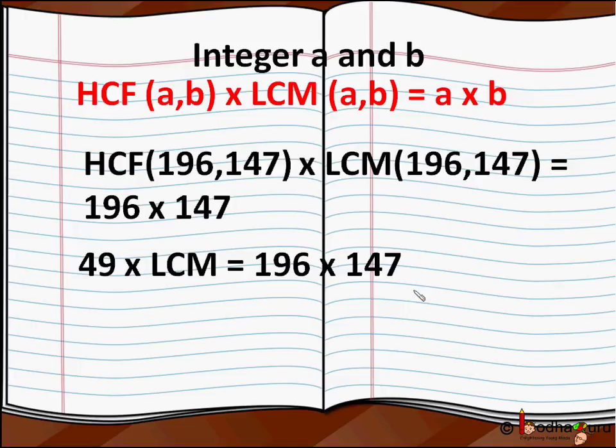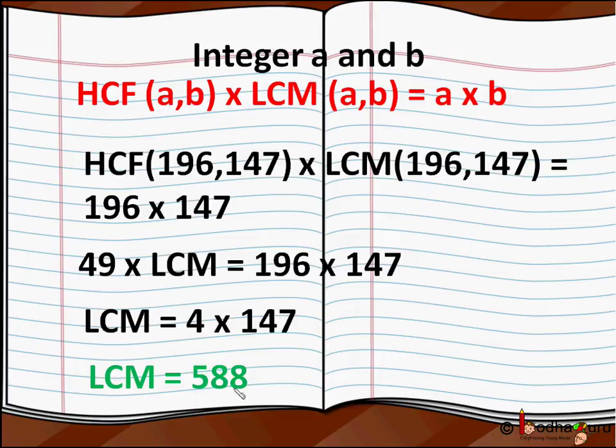We replace the value: HCF(196,147) = 49. So 49 × LCM = 196 × 147. So LCM = (196 × 147) / 49. We know 196 / 49 = 4, so it becomes 4 × 147, which means LCM = 588.